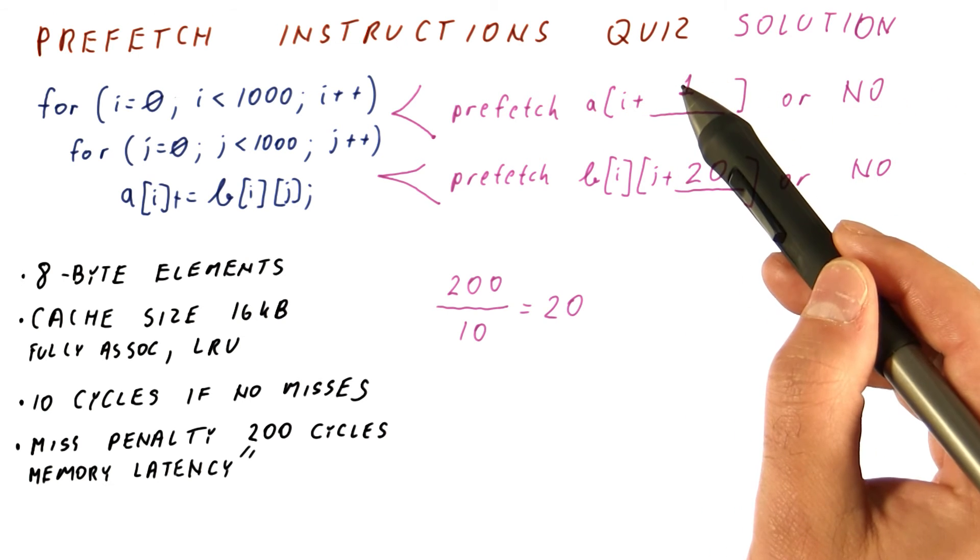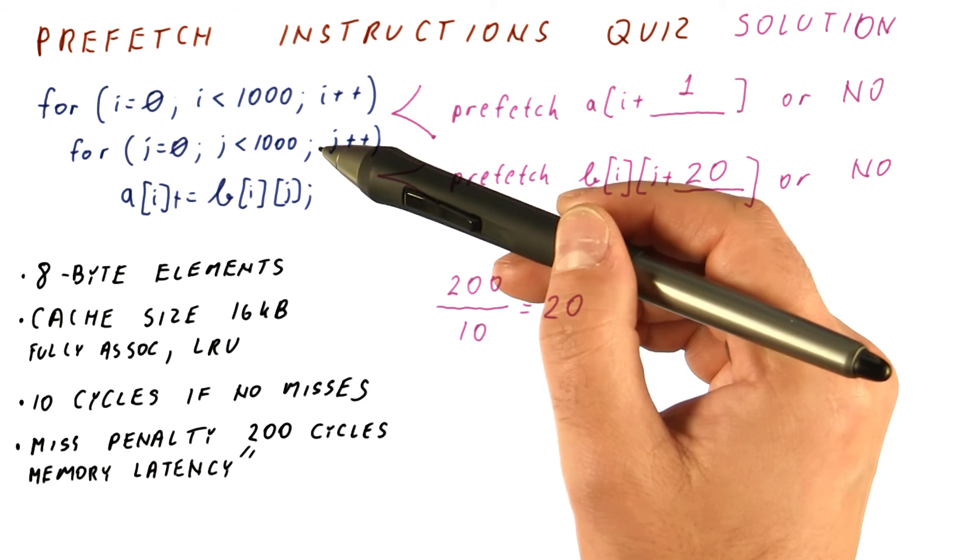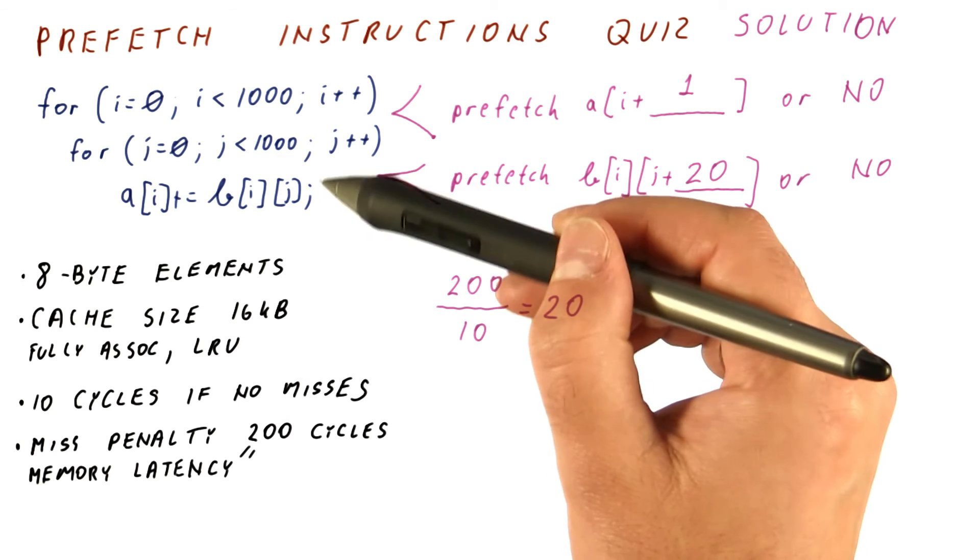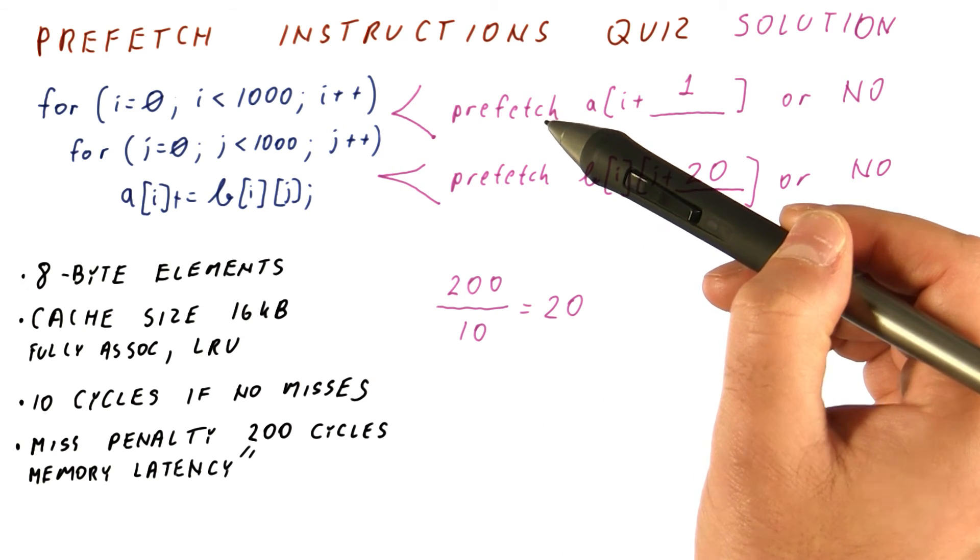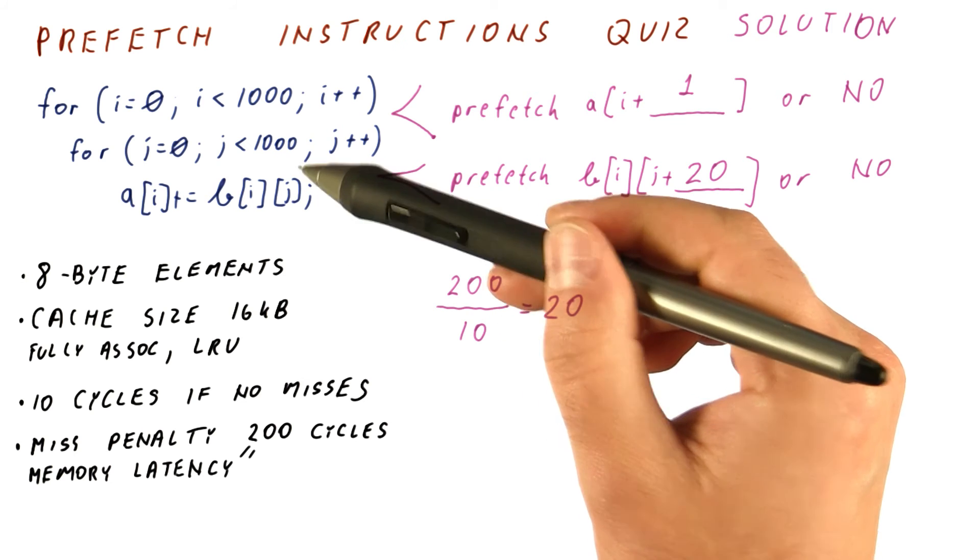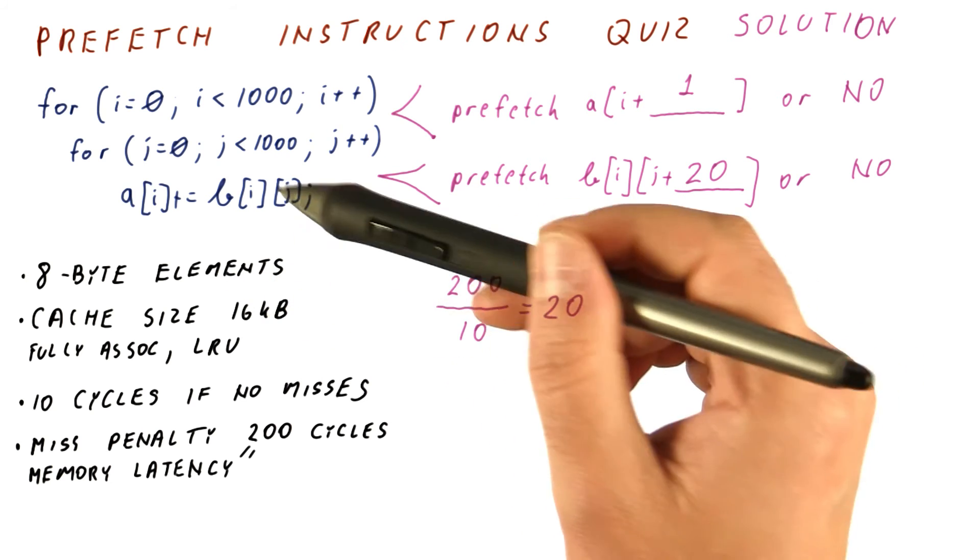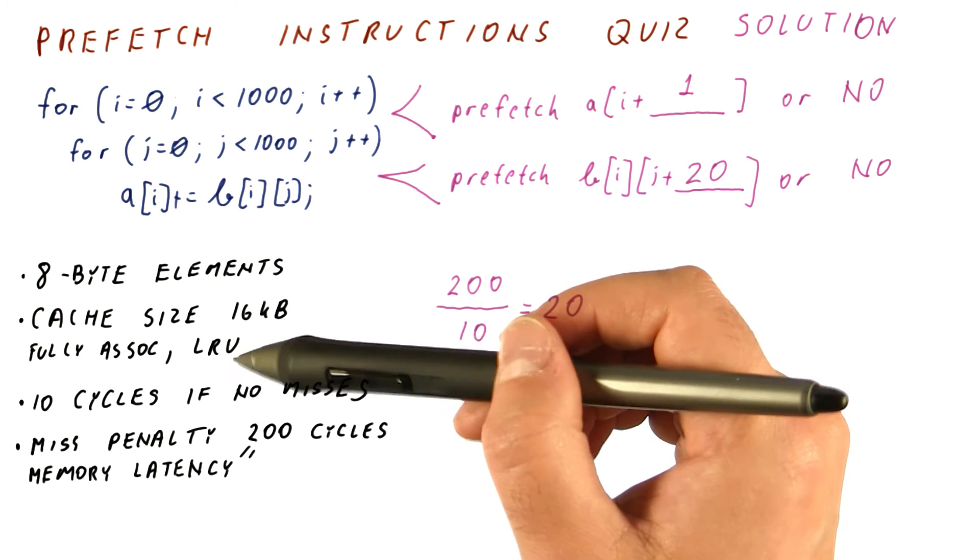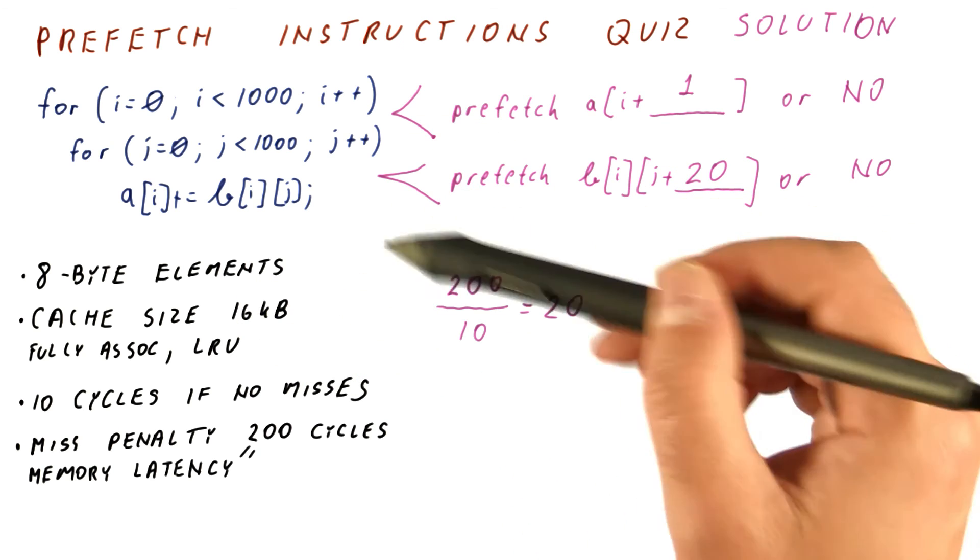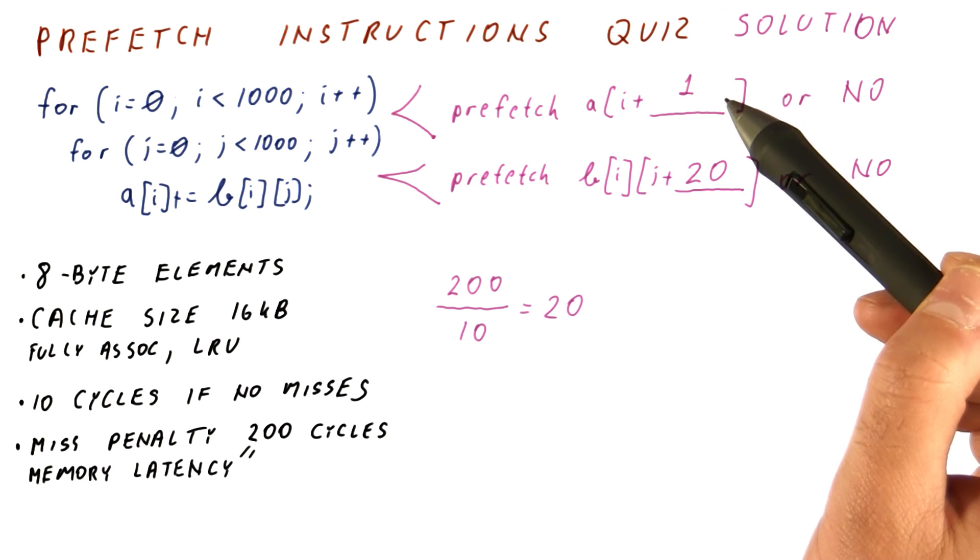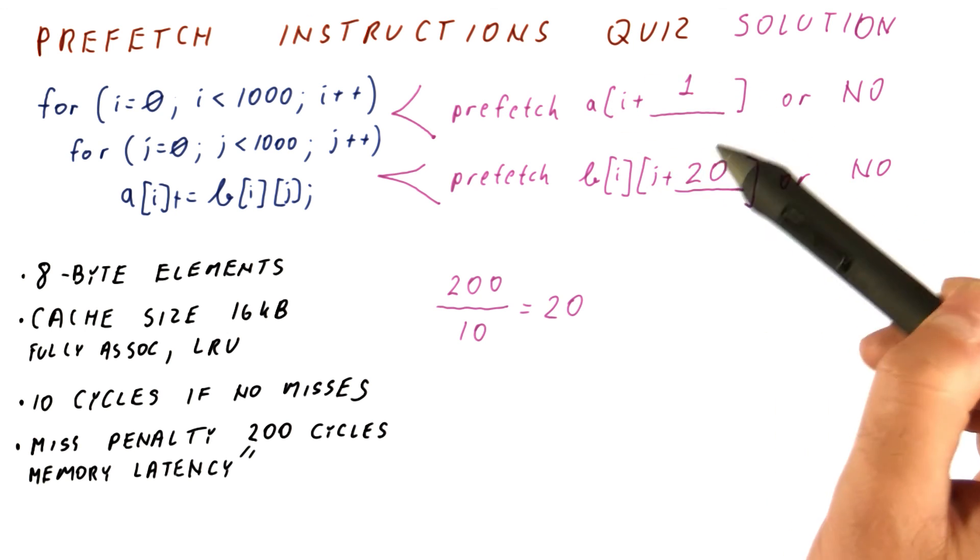Note that we should not prefetch with I plus 20 here. If we do that, there are 20 loops between when we prefetch and when we use it, and each loop brings in 8,000 bytes of B. If we prefetch that early, then 20 times 8 is larger than our cache, and the element we prefetch would be kicked out. That would be an example of premature prefetching.